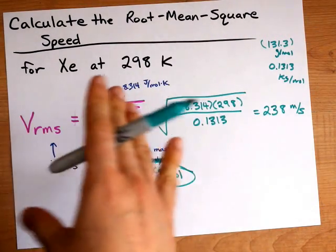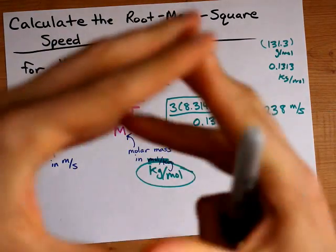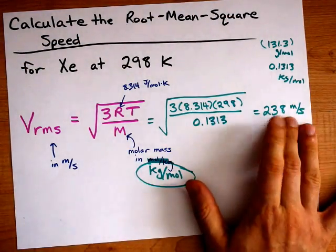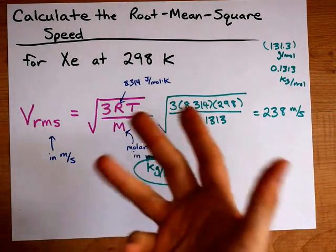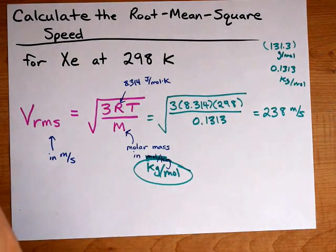The reason gases don't actually move anywhere is because they're usually trapped in a container. And long story short, this is about what I expect. If I get an answer between 200 and 400 for a root mean square speed, I'm generally happy. That's the calculation.